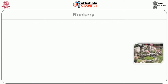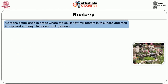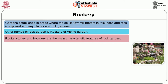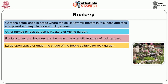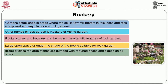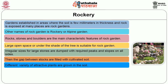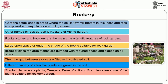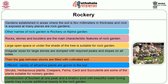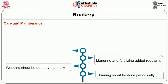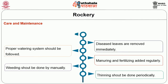We will see about the rockery. Gardens established in areas where the soil is few millimeters in thickness and rocks are exposed at many places are called rock gardens. Another name is rockery or alpine garden. Rocks, stones and boulders are the main characteristic features. Large open spaces or under the side of a tree are suitable for rock gardens. Irregular large stones are arranged with required peaks and slopes on all sides, and the gaps between the rocks are filled with cultivated soil. Different varieties of attractive plants are grown in the soil — shrubs, herbaceous plants, creepers, ferns, cacti and succulents are suitable for rockery. Construction of a fountain at one peak and a shallow pool with water-loving plants may add additional beauty. Care and maintenance of rock garden: thinning should be done periodically, weeding should be done manually, manuring and fertilizing added regularly, proper watering system should be followed, diseased leaves removed immediately, and dead leaves and shoots frequently removed.